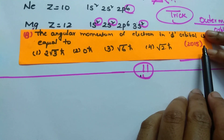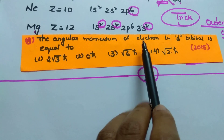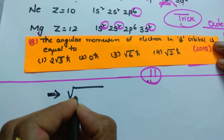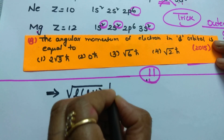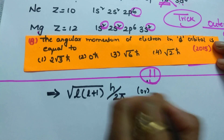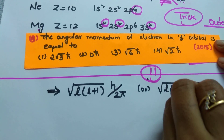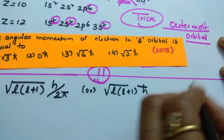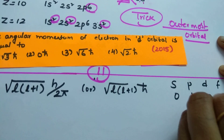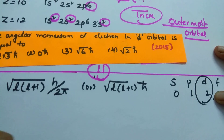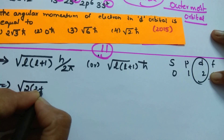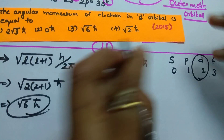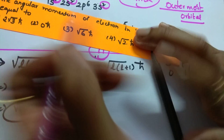Next question from 2015: the angular momentum of an electron in the d orbital is equal to? The formula to calculate orbital angular momentum is √[l(l+1)] · h/2π, or √[l(l+1)] · ℏ. The l value for d orbital is 2. Substituting: √[2(2+1)] · ℏ = √6 · ℏ. So the answer is √6 · ℏ. The third option is correct.